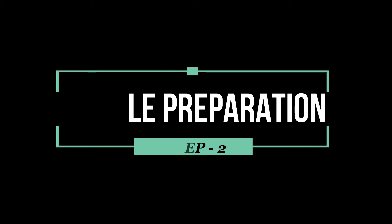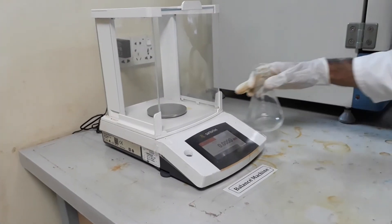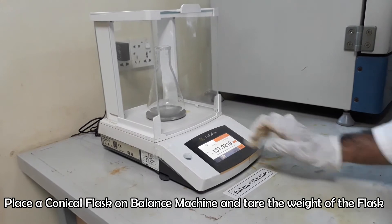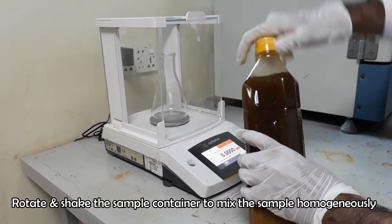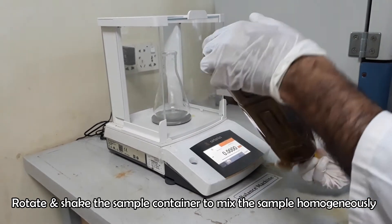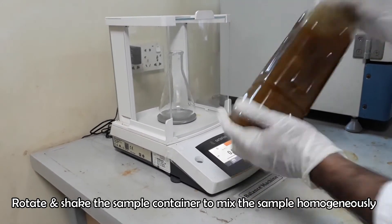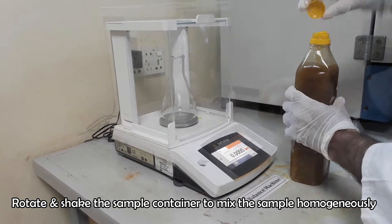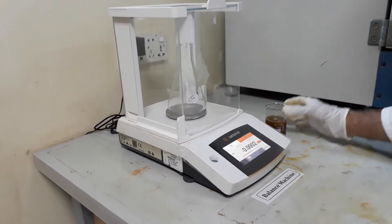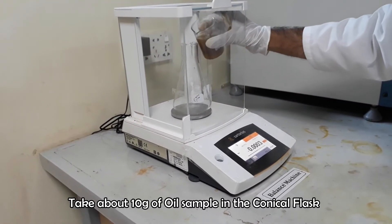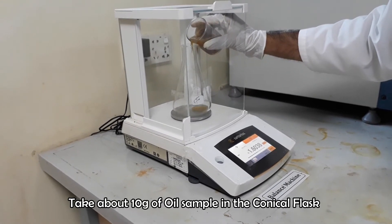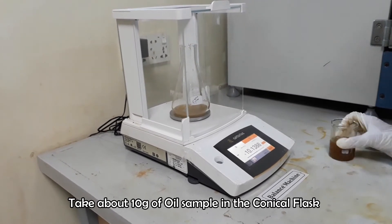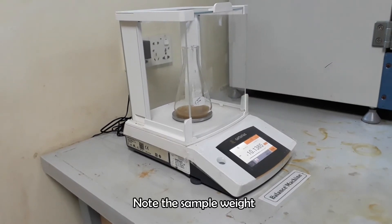Now we will prepare our sample. Take about 10 grams of oil sample in a conical flask. Note the sample weight.